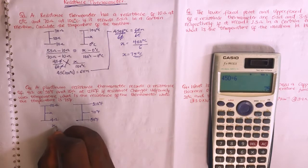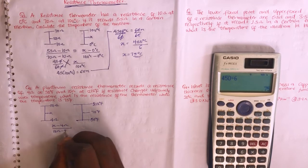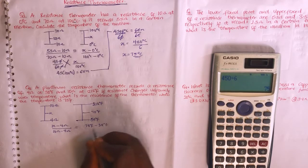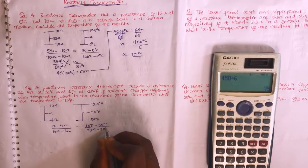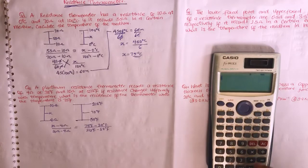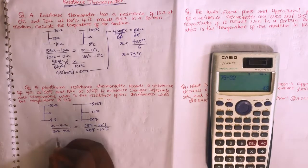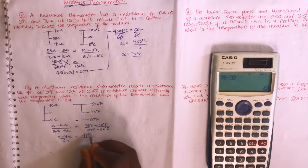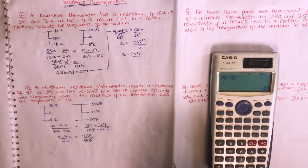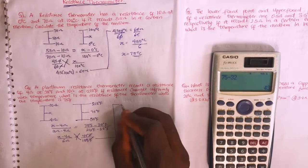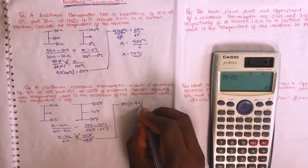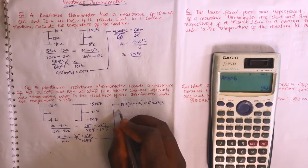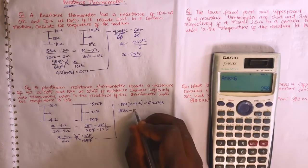Following the same procedure: (x − 4) / (10 − 4) = (75 − 32) / (212 − 32). Simplifying: (x − 4) / 6 = 43 / 180. The Fahrenheit units cancel, and we cross-multiply to get: 180(x − 4) = 43 × 6. Expanding: 180x − 720 = 258.